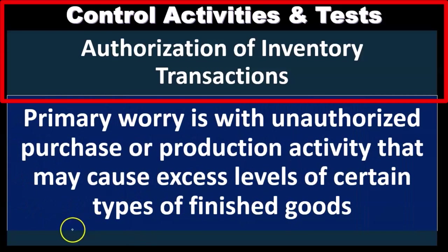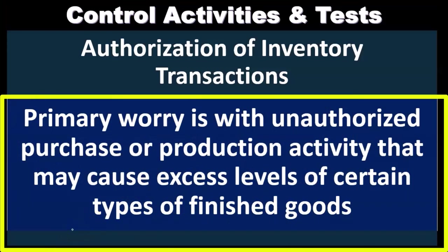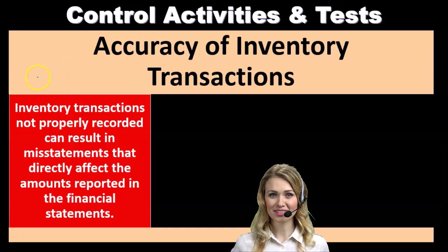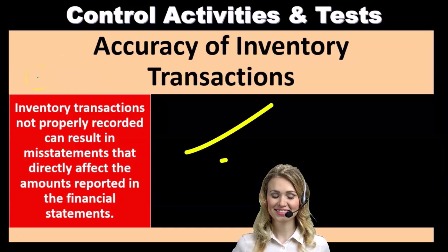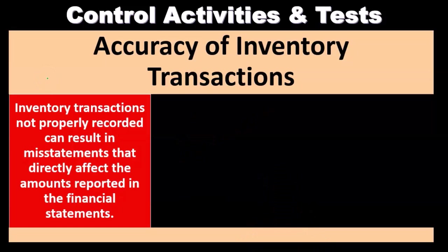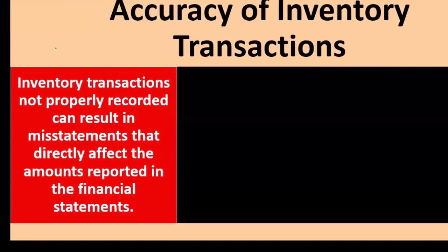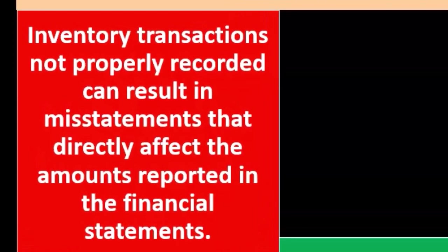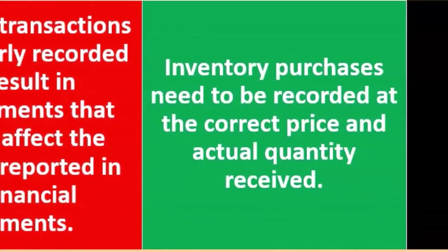For the authorization of inventory transactions, the primary concern is the unauthorized purchase of production activity that may cause excess levels of certain types of finished goods. For the assertion of accuracy, inventory transactions not properly recorded can result in misstatements that directly affect the amounts reported on the financial statements. Inventory purchases need to be recorded at the correct price and the actual quantity received.